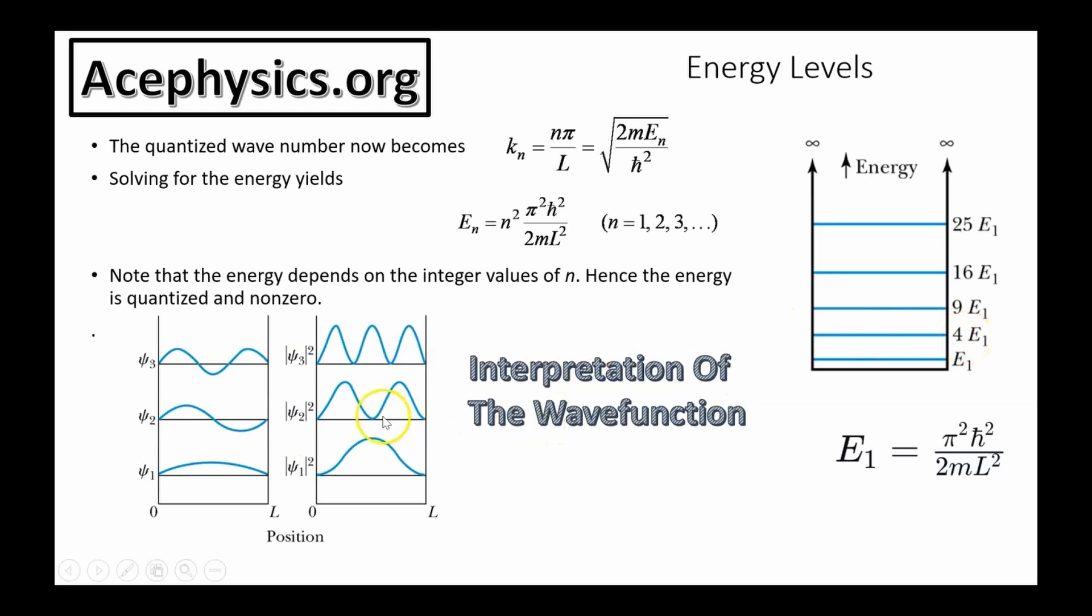If you're in the next energy state, E2, that tells you that you will never find the particle at the center of the box because psi 2 squared is this function, the particle would never be at the center of the box. It would have a high probability to be here and here and psi 3 squared looks like this. You'd never find the particle here and here. This problem covers many of the main concepts that come up in quantum mechanics and that's why this is the problem that people learn from the beginning.